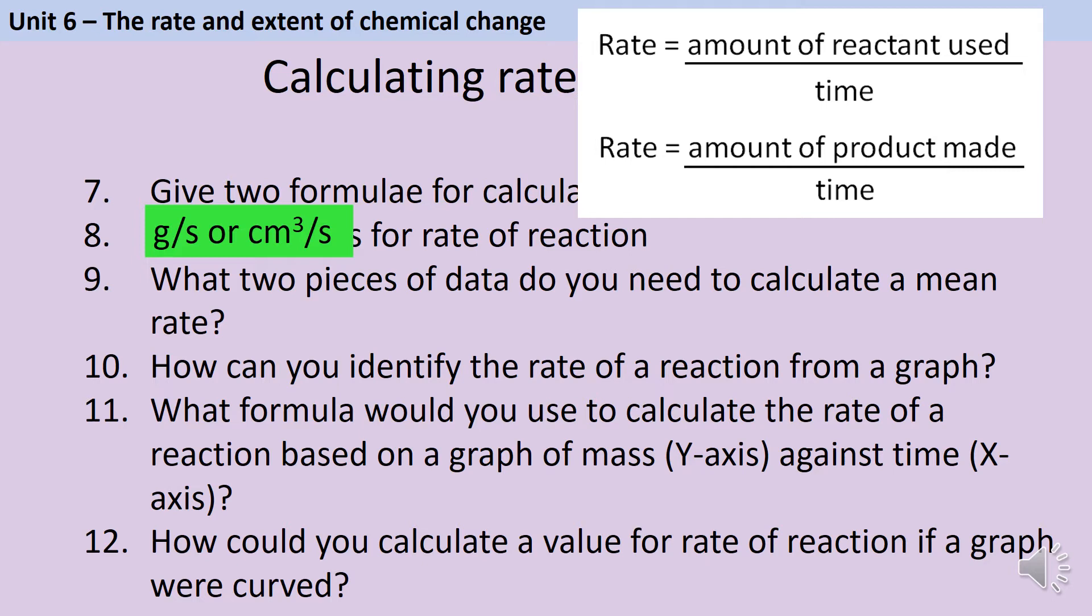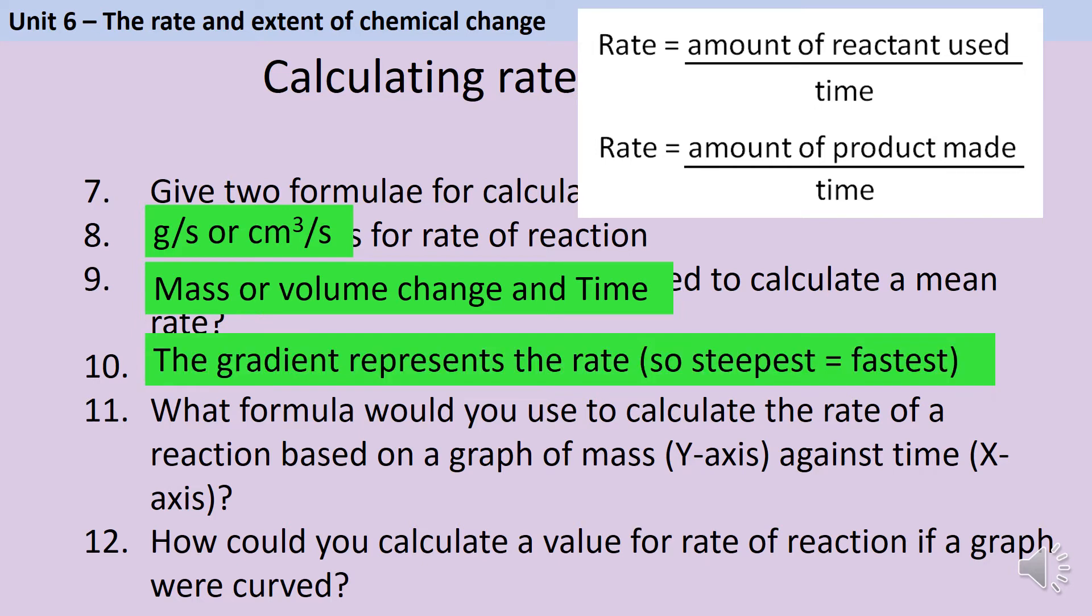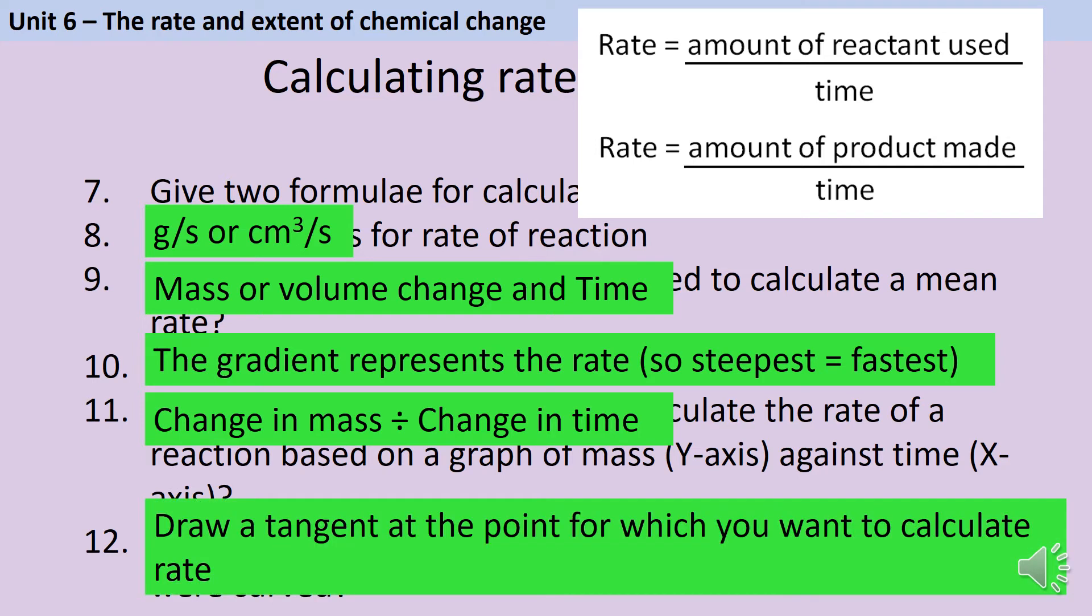To calculate a mean rate, we either need a mass or a volume change and we need a time. If we've got a graph, the gradient or steepness represents the rate. Where the graph is steepest, that's where the reaction is happening fastest. I would calculate the gradient using the change in mass divided by the change in time. If the graph is curved, I would draw a tangent for the point and then use that to calculate a rate.